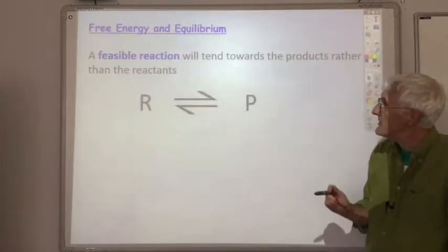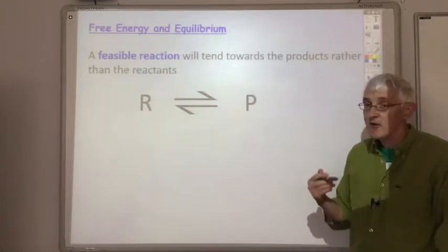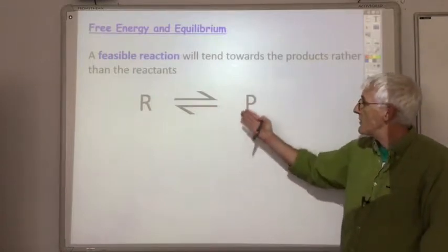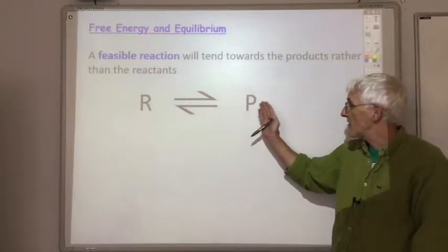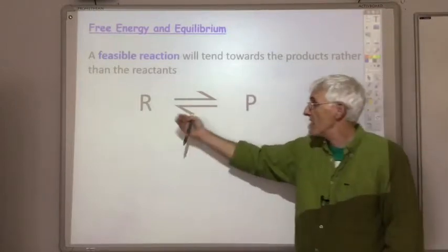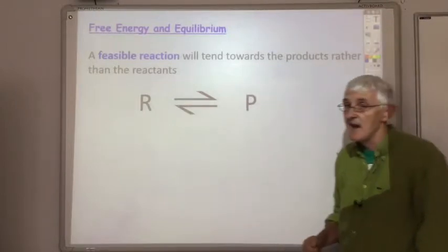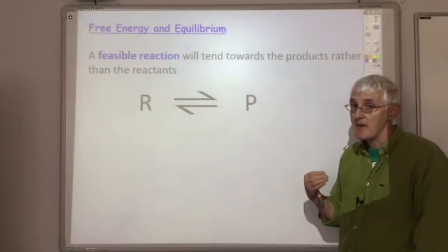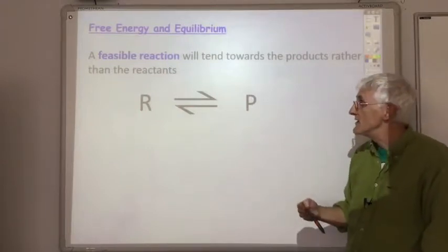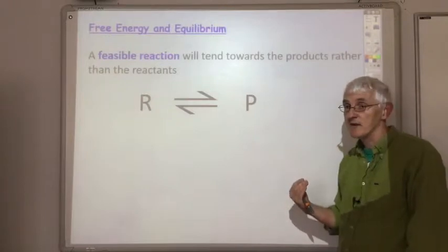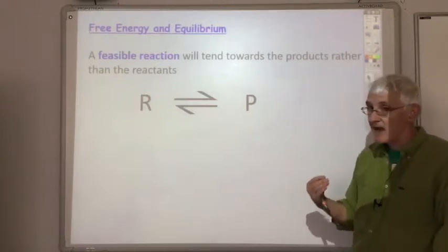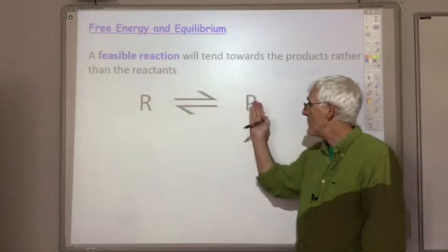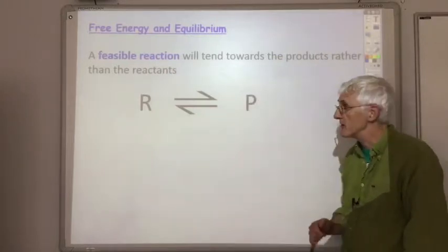This means that if delta G is negative, then at equilibrium you will have more product — a greater concentration of product than reactant. And if delta G is positive, it's not that the reaction won't happen at all. Some reactants will get converted into products, but at equilibrium the concentration of reactants will be far greater than the concentration of products.